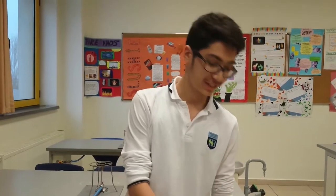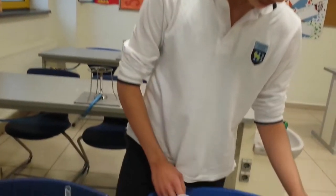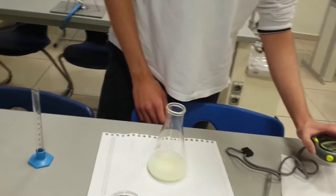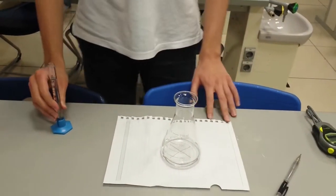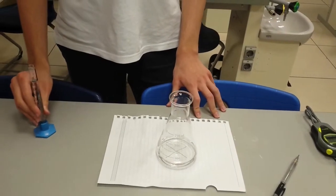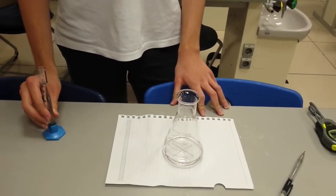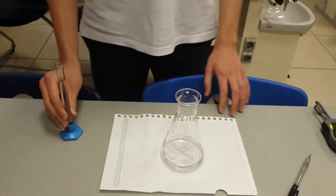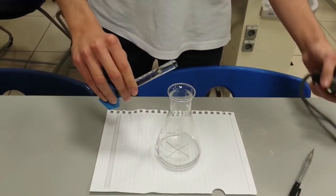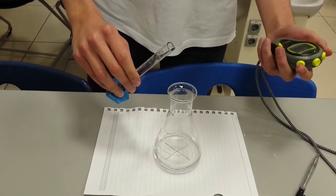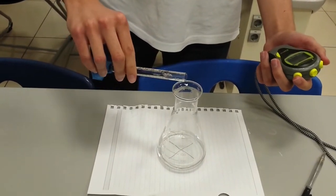I have 30 milliliters of sodium thiosulfate added with 20 milliliters of distilled water. This means it has the lowest concentration out of the three flasks. I'm gonna add now the hydrochloric acid and see how much time it's gonna take for the cross to disappear.